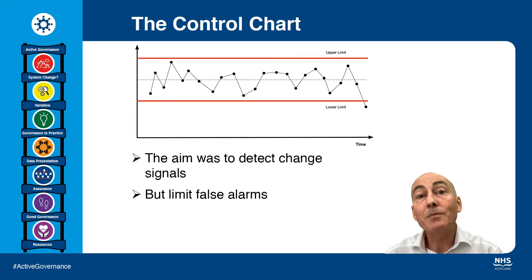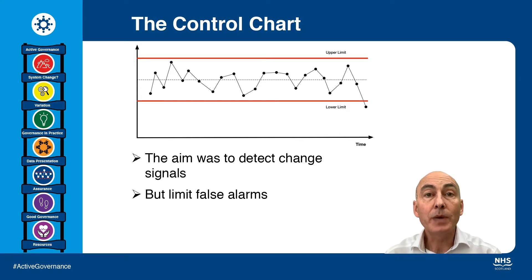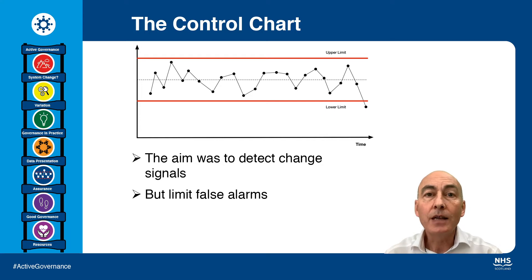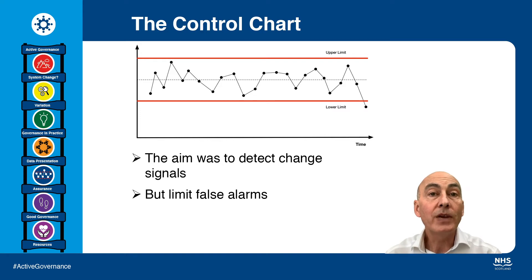Here's an example of the control chart that Shewhart came up with. It's simply the data plotted in respect to time, but we add control limits. These are the red lines on the chart. As you can see, one of the points has dropped below the lower control limit, and this is a strong signal that something has changed in your system — it's worthwhile going to investigate and learn what's actually happened.